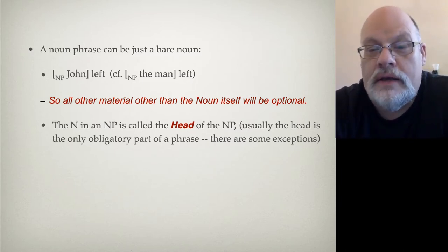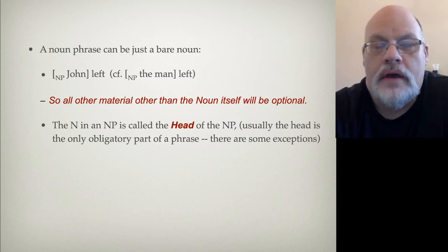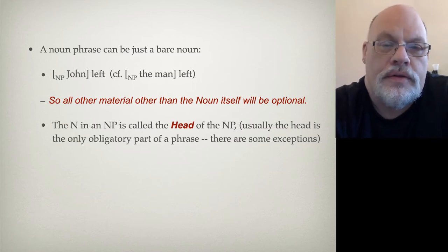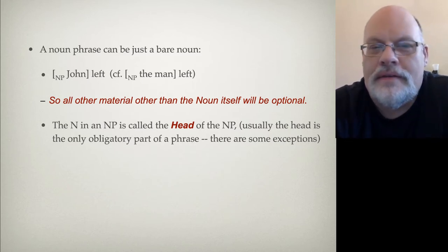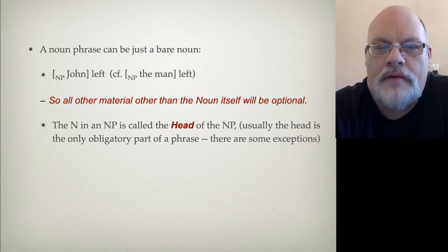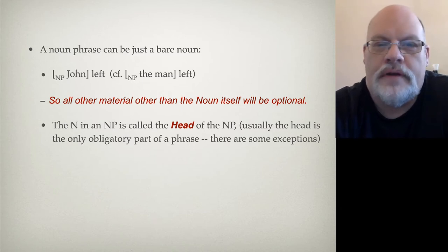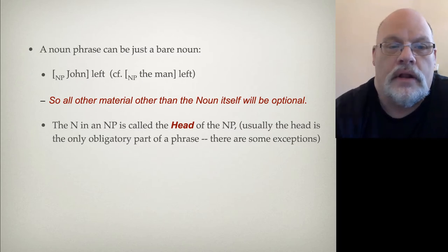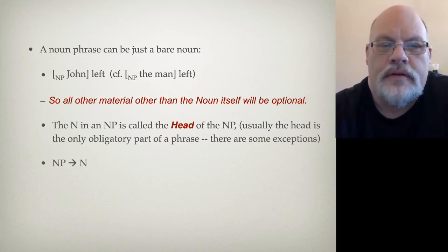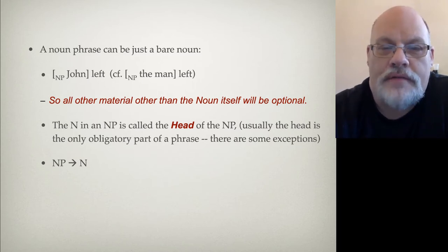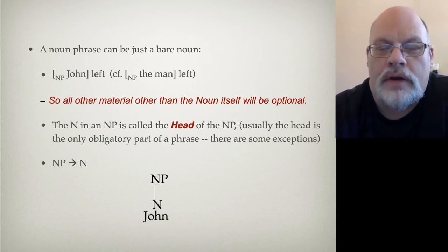Usually, the head is the only obligatory part of a phrase. There are some exceptions having to do with functional categories, where the head can sometimes be left off. But for most categories — like noun phrases, verb phrases, prepositional phrases, and adjective phrases — the head is always the obligatory element in the phrase. So here's our rule based on the data 'John left': a noun phrase consists of a noun. We know this will need revision, but let's look at what the tree structure for that noun phrase would look like.